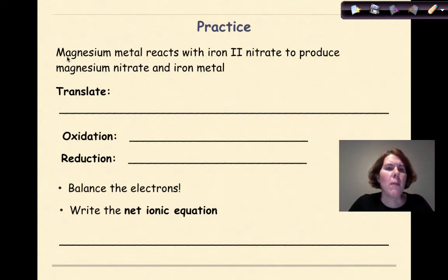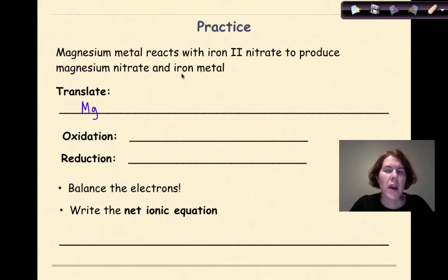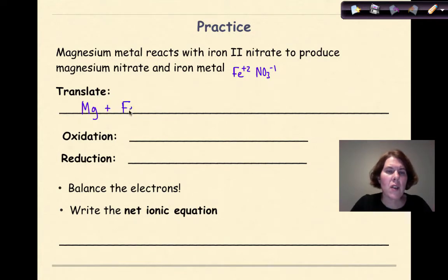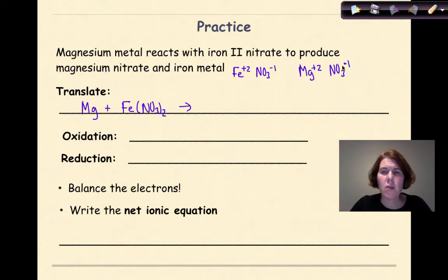Welcome back, let's see how you did. Magnesium metal reacts with iron(II) nitrate to produce magnesium nitrate and iron metal. Magnesium metal is Mg. Iron is Fe — they give me the charge for iron, which is critical: that's plus two. The nitrate is going to be NO₃ minus one. So when I cross this down, I'm going to have Fe(NO₃)₂. To produce magnesium nitrate — magnesium is Mg plus two, nitrate is NO₃ minus one — so my formula is Mg(NO₃)₂ — plus iron metal, Fe.